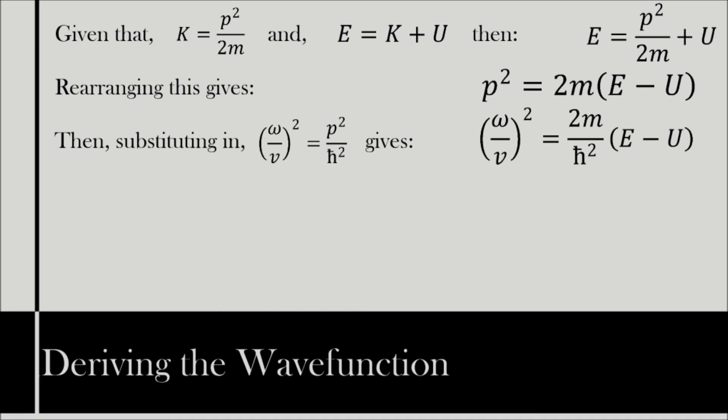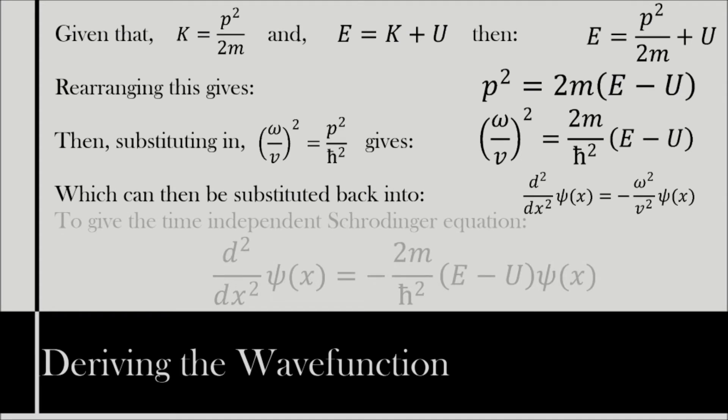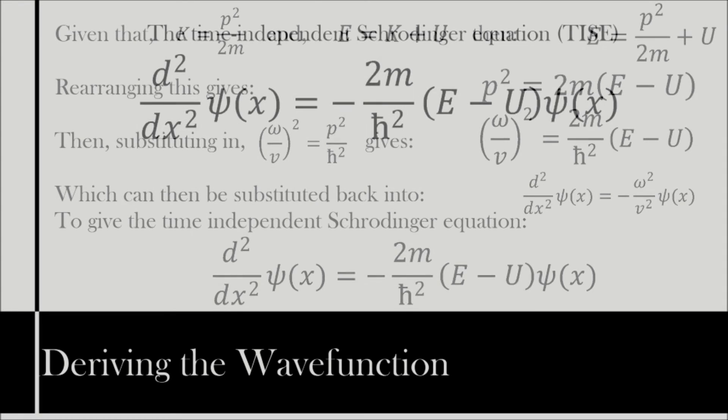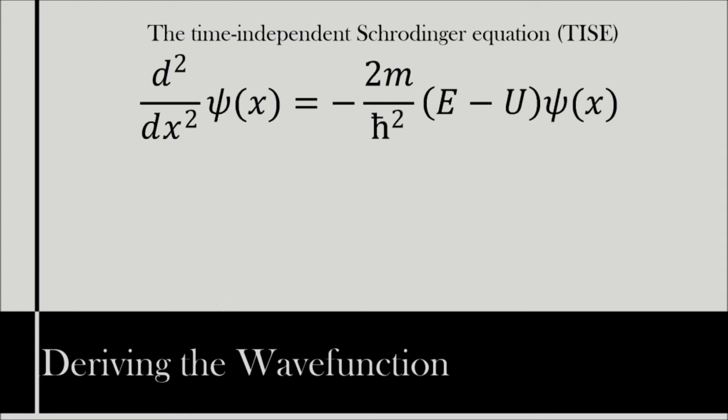Which is then substituted into equation 5 to give (ω/v)² equals 2m over ℏ² times (E - U). This can then be substituted into the classical wave equation, yielding the time-independent Schrödinger equation. Second order differential with respect to x of ψ(x) equals minus 2m over ℏ² times (E - U) times ψ(x).